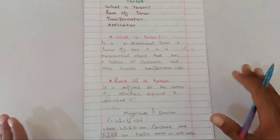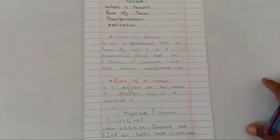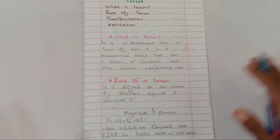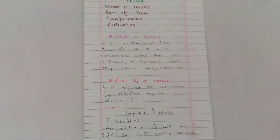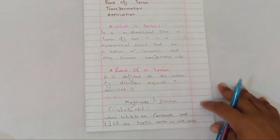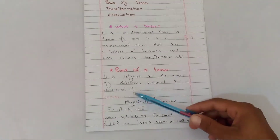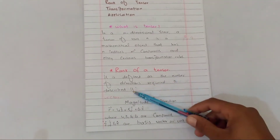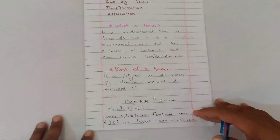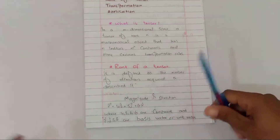The rank of a tensor is defined as the number of directions required to describe it. This is not rocket science — it is a straightforward concept we will now explore through examples, starting with vectors.